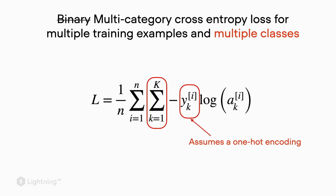Similar to the binary cross entropy, we use y to refer to the class labels, but here y also has the subscript k which refers to the class label index. However, this notation requires that we apply one hot encoding to the class labels. The values for y are still expected to be zero and one, and we will see how we can get that from a classification task with multiple class labels.